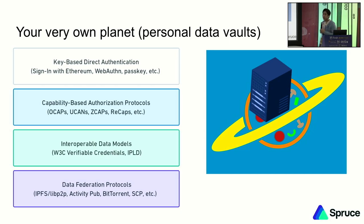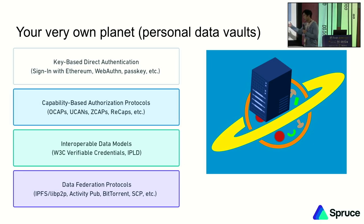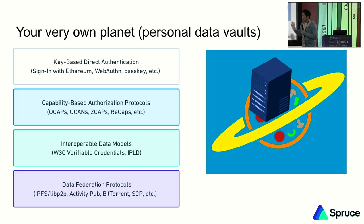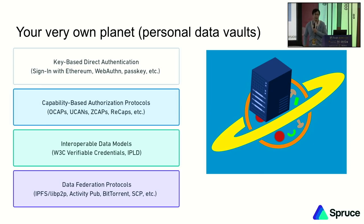Data federation protocols are super exciting too. A lot of the groundwork has been done by IPFS, LibP2P, BitSwap, those kinds of algorithms. But hat tip to the old school stuff too — ActivityPub, BitTorrent, SCP. I always thought BitTorrent was funny compared to blockchain, because basically in blockchain you're fitting a lot of different transactions into a block, but in BitTorrent you're fitting a lot of blocks into like one transaction. And SCP is awesome too.